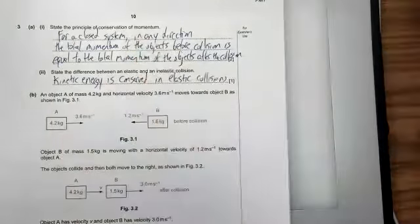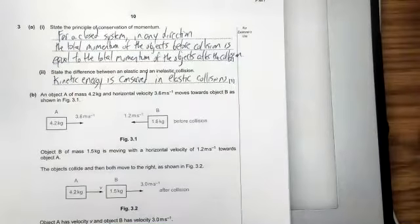I prefer this definition, but there's an equivalent definition we mentioned a moment ago. For a closed system, in any direction, the total momentum of the objects before the collision is equal to the total momentum of the objects after the collision. So that is a statement of the principle of conservation of momentum.